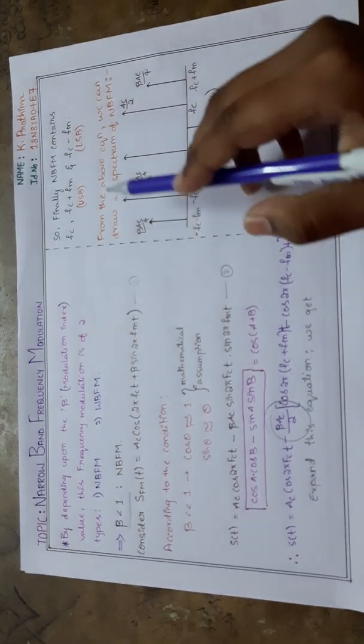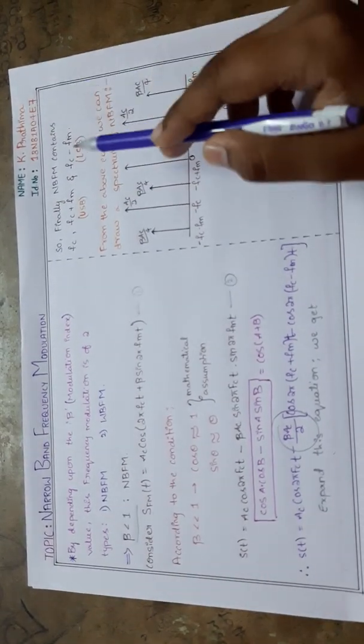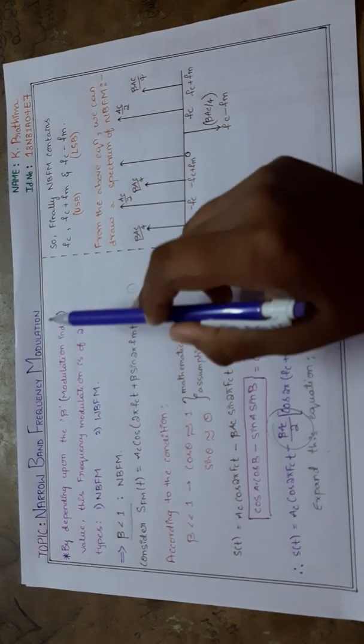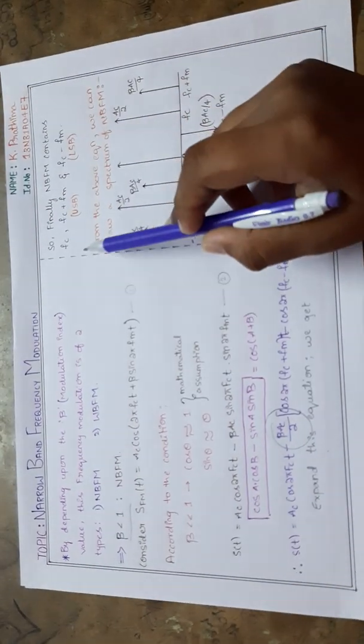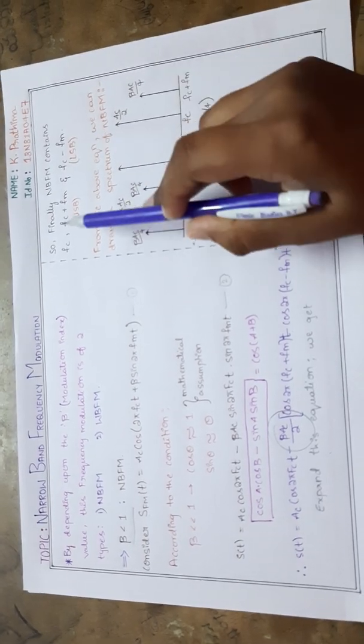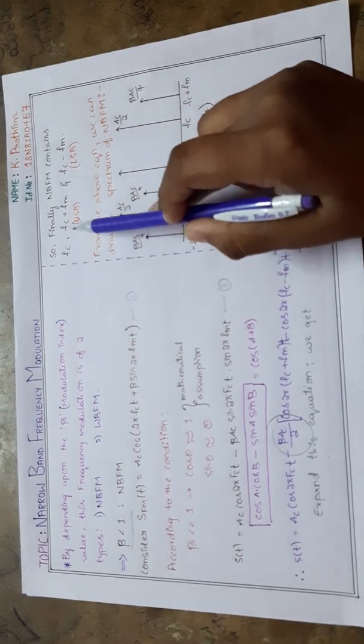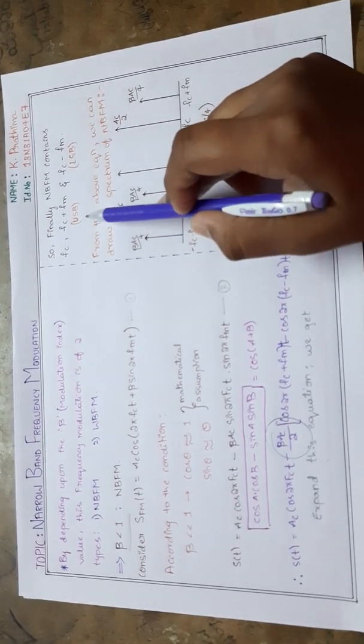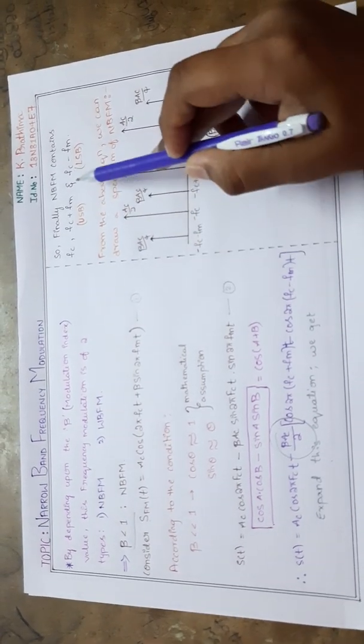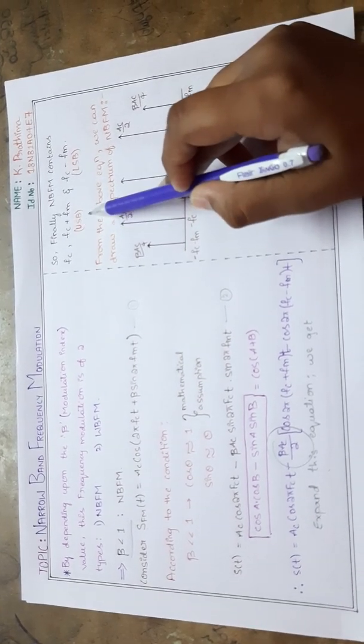Finally, narrow band frequency modulation contains f_C, f_C + f_M, and f_C - f_M. Here f_C means frequency of the carrier signal. f_C + f_M means upper sideband, written in short form as USB.